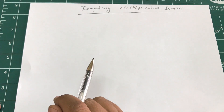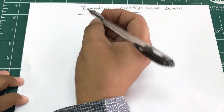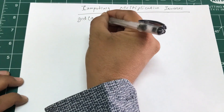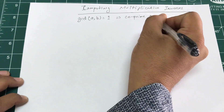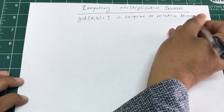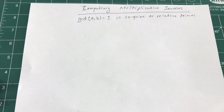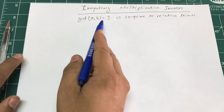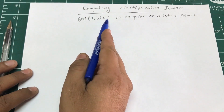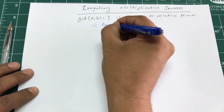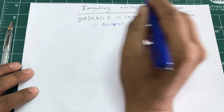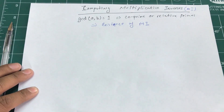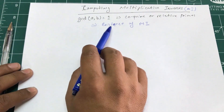So how do we actually calculate multiplicative inverses? The rule is simple: if the GCD of two numbers is 1, they are known as co-primes or relative primes. And when the GCD of two numbers equals 1, there is definitely going to be an existence of a multiplicative inverse (MI).